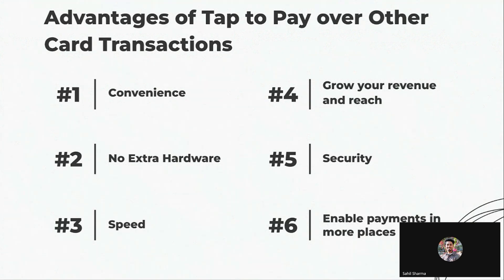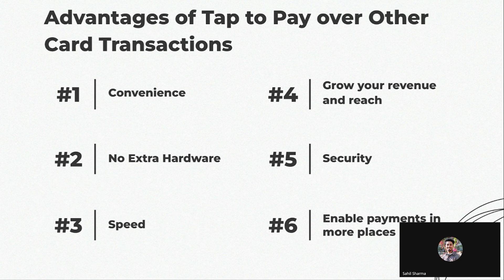When you swipe or insert a card into a reader, there is direct physical contact, which creates a chance of attacks. But when you tap a card, a cryptogram is sent which is very unique and very hard to replicate, making the transaction more secure. Without the need for extra hardware, this feature can be used at many locations, giving businesses a great edge.